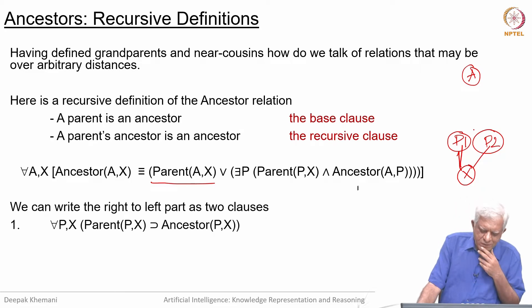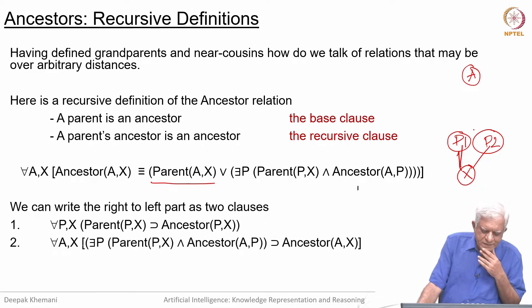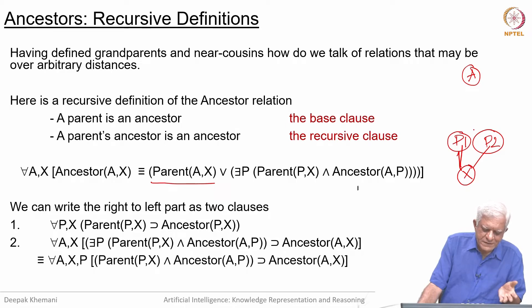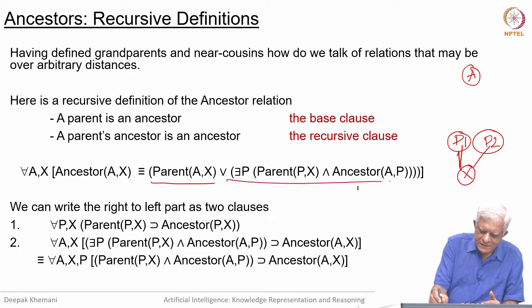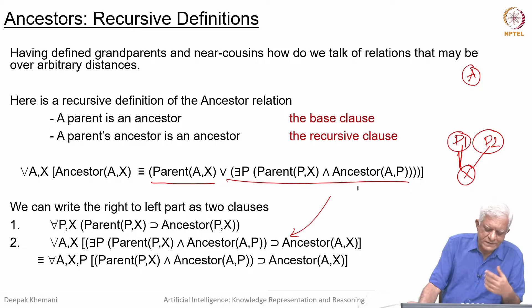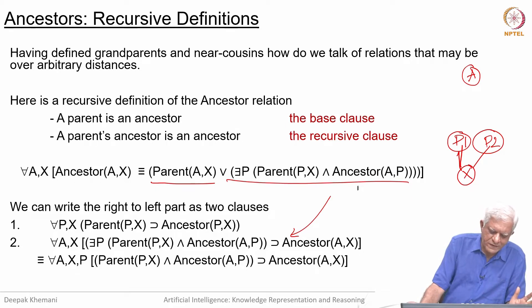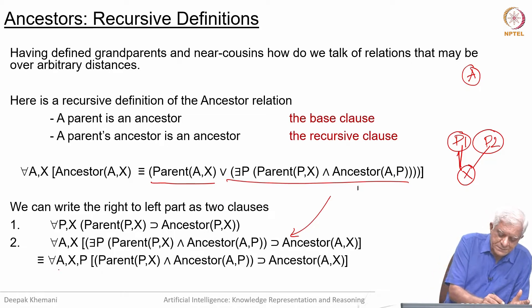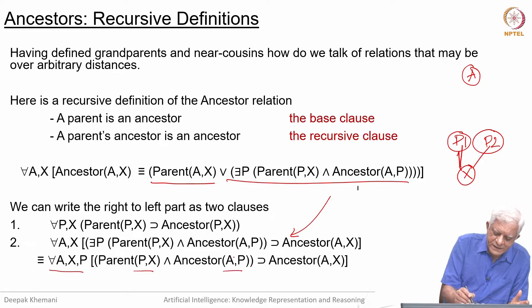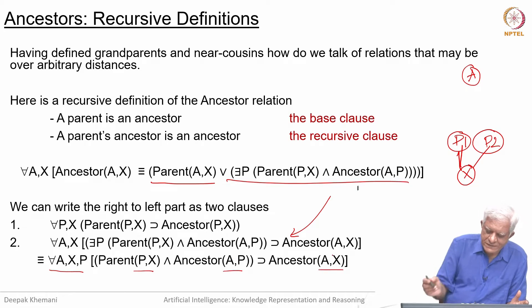The right-to-left part can actually be broken down into two separate clauses. The base clause says: if P is the parent of X, then P is the ancestor of X. The recursive clause, copied from before, moves the existential quantifier out of the left-hand side and converts it into a universal quantifier. The definition now becomes: for all A, X, P — if P is the parent of X and A is the ancestor of P, then A is the ancestor of X.